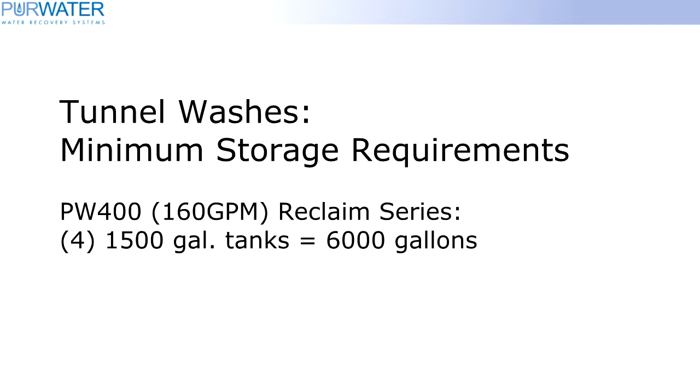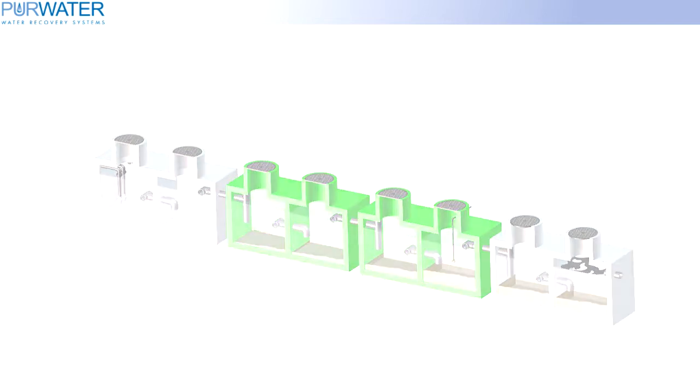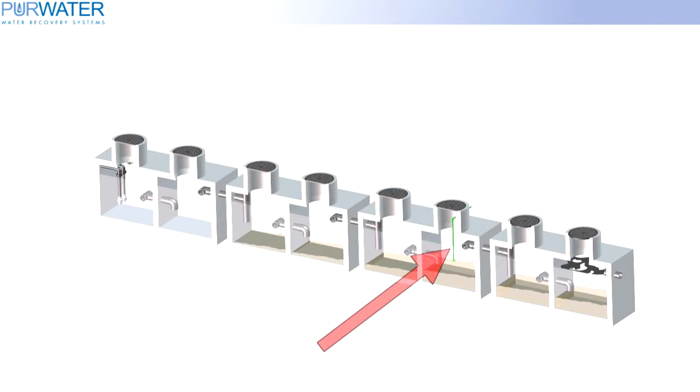In a tunnel wash using a PW400, a minimum of 6,000 gallons is required. When using four tanks, you would have two tanks added in the middle of a two-tank setup. In this case, the only plumbing change would require the recirculation line to be plumbed into the second tank, first chamber.